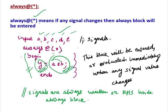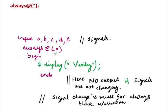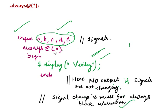In this example with five signals, if always @(*) is used and there is a signal change, then the display or output will be triggered. But if there is no signal change, there will be no output — it won't display anything. Signal change is a must for always block evaluation. If there is no signal change, the block won't be evaluated.